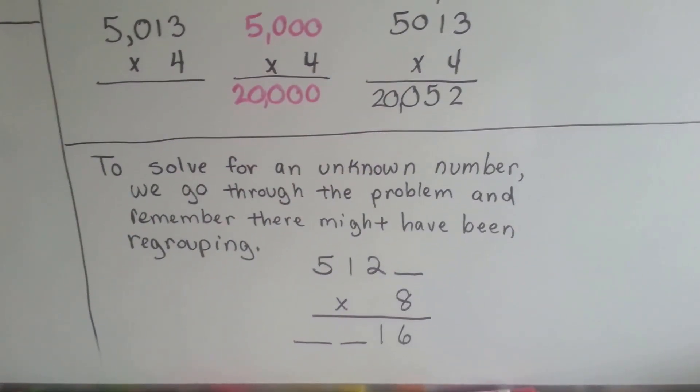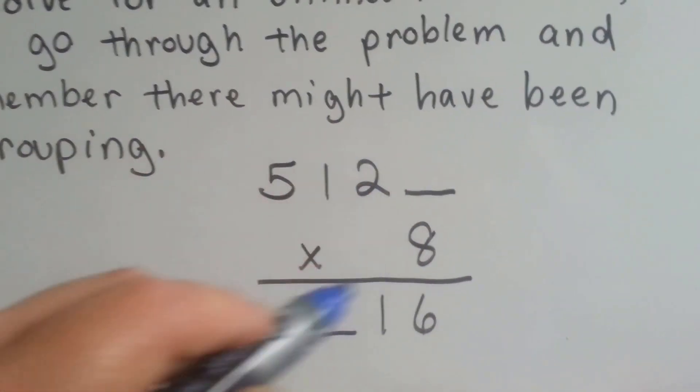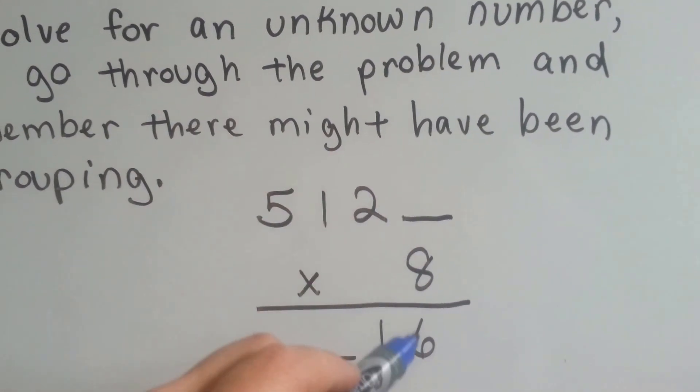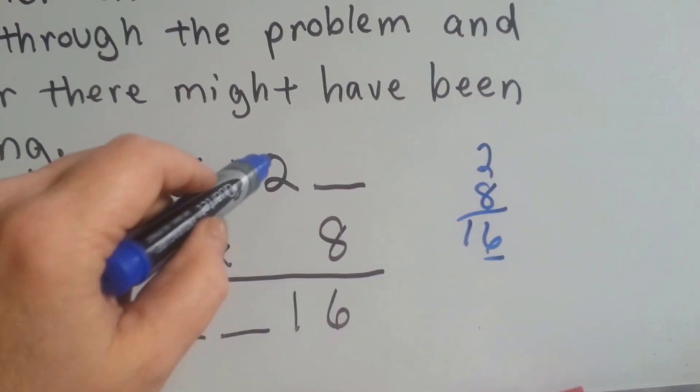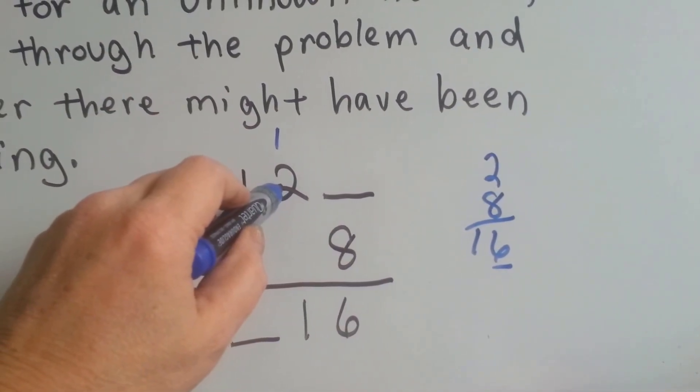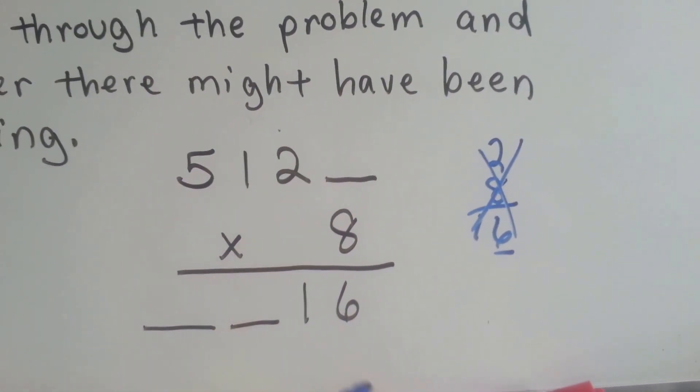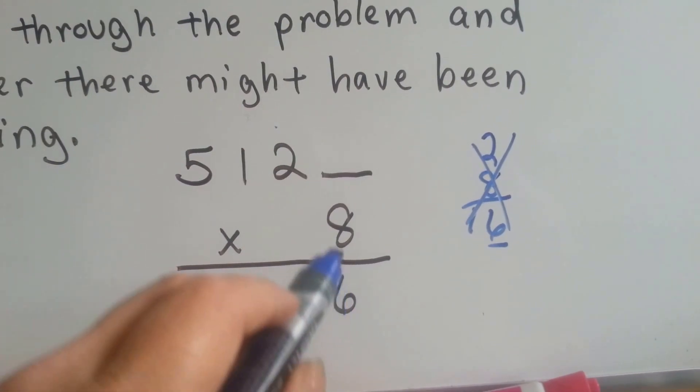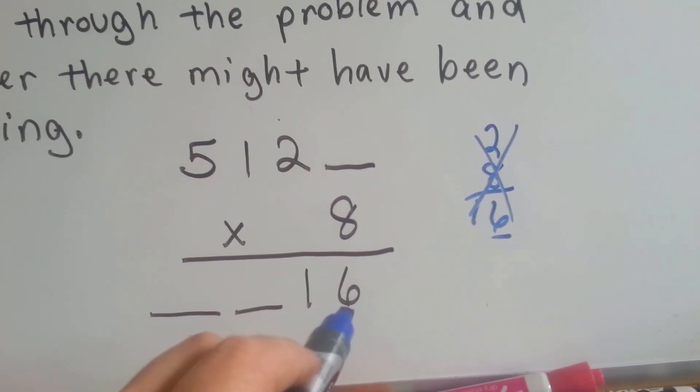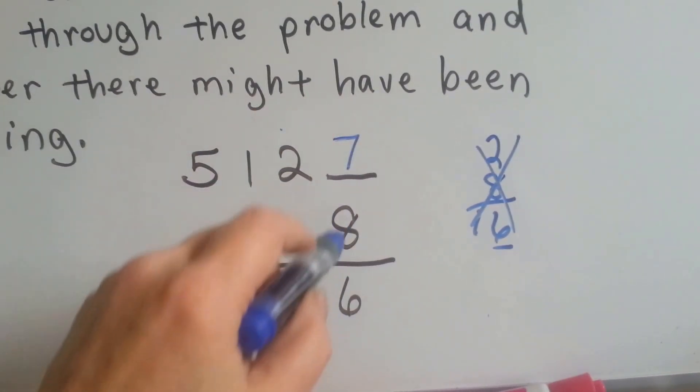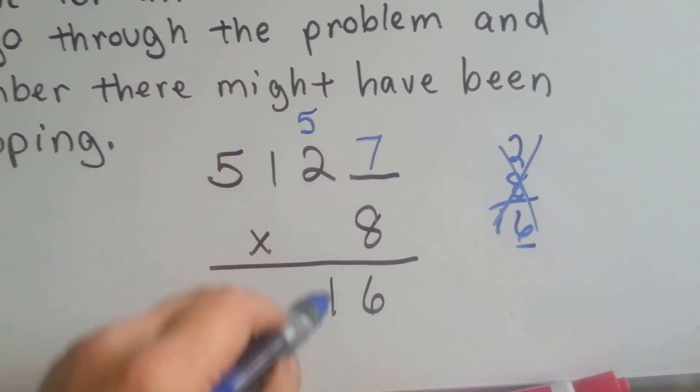Now to solve for an unknown number, we go through the problem, and we remember that there might have been regrouping. If you look at this one, and we needed to figure out what was missing, we need to ask ourselves, what could 8 be multiplied by that would end in a 6? Well, 8 times 2 is 16, that ends in a 6. But if we carried over the 1 here, and did 8 times 2 is 16, and 1 more is 17, that wouldn't be a 1 there. So it's not 2. What else can 8 be multiplied by that would have a 6 for the answer? 8 times 7 is 56. Let's try 7. If this was a 7, would it work? 8 times 7 is 56. Carry the 5 and put the 6 down. 8 times 2 is 16, plus 5 is 21. That works!